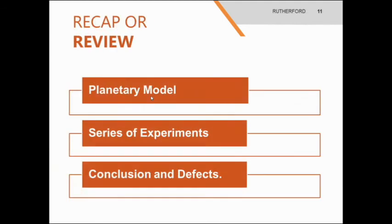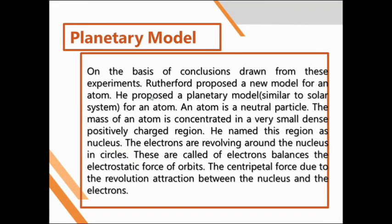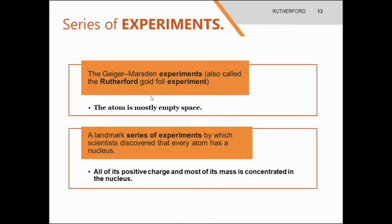Now, recap or review. We will recap the planetary model, series of experiments, conclusions, and defects. The planetary model is similar to the solar system — the sun is considered as the nucleus, and the planets revolving around it are considered as electrons, while the paths where they revolve are considered as orbits. In the series of experiments, the atom is mostly empty space, and all of its positive charge and most of its mass is concentrated in the nucleus.